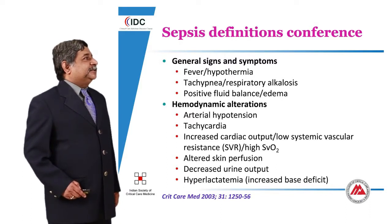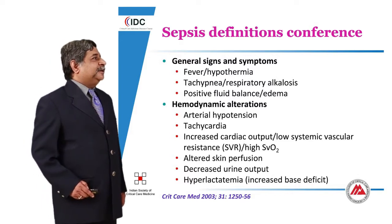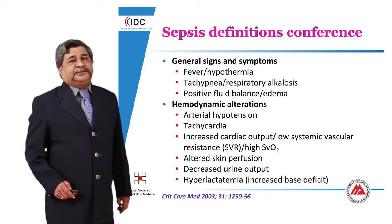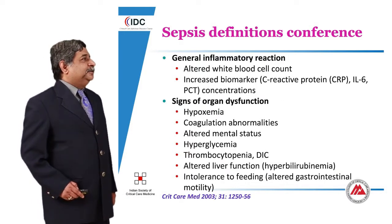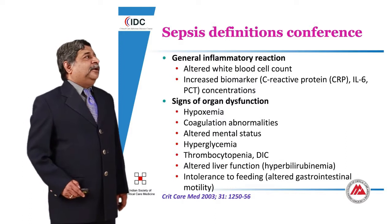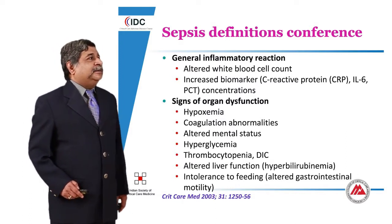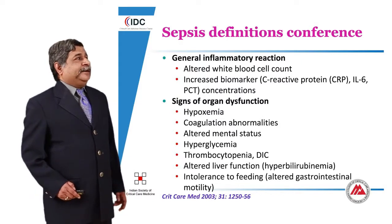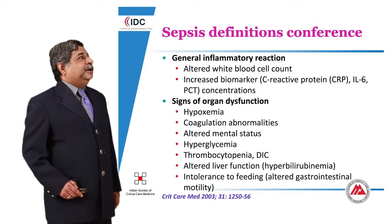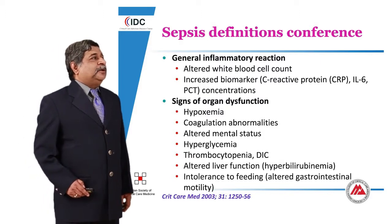Hemodynamic alterations include hypotension, tachycardia, increased cardiac output, low systemic vascular resistance, or high mixed venous oxygen saturation. Additional signs include altered skin perfusion, decreased urine output, hyperlactatemia, and signs of organ dysfunction such as hypoxemia. One of the commonest abnormalities in sepsis is low platelet, along with coagulation abnormalities, altered mental status, and hyperglycemia.